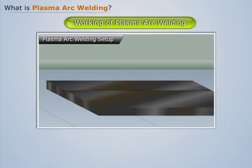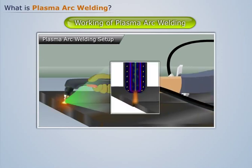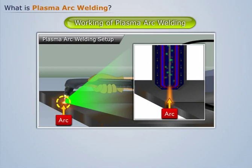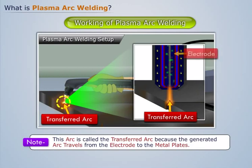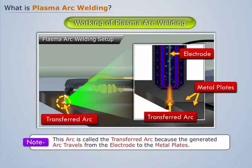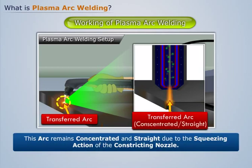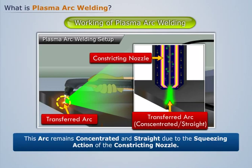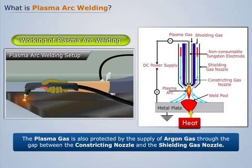Now, when we bring the welding torch closer to the interface of the metal plates, we see that an arc is generated from the welding torch. Note that this arc is called the transferred arc because the generated arc travels from the electrode to the metal plates. This arc remains concentrated and straight due to the squeezing action of the constricting nozzle, which produces a lot of heat at the interface.